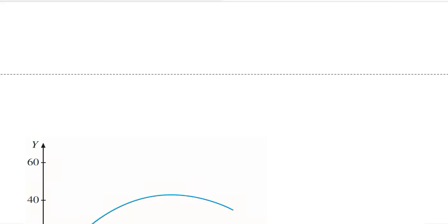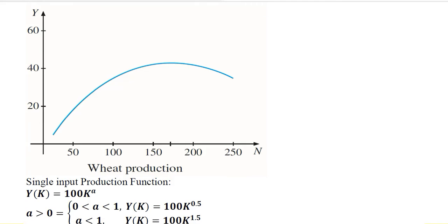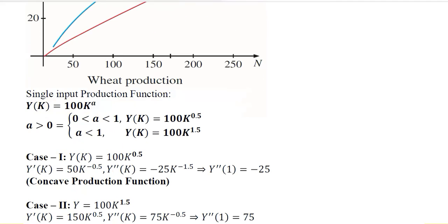Then we take another example — wheat production. Here wheat production is plotted and you can see it is an increasing function but at a decreasing rate. Looking at the shape, it is a concave diagram — specifically an increasing concave diagram. This is a production function, y as a function of capital, showing how much capital is being used.